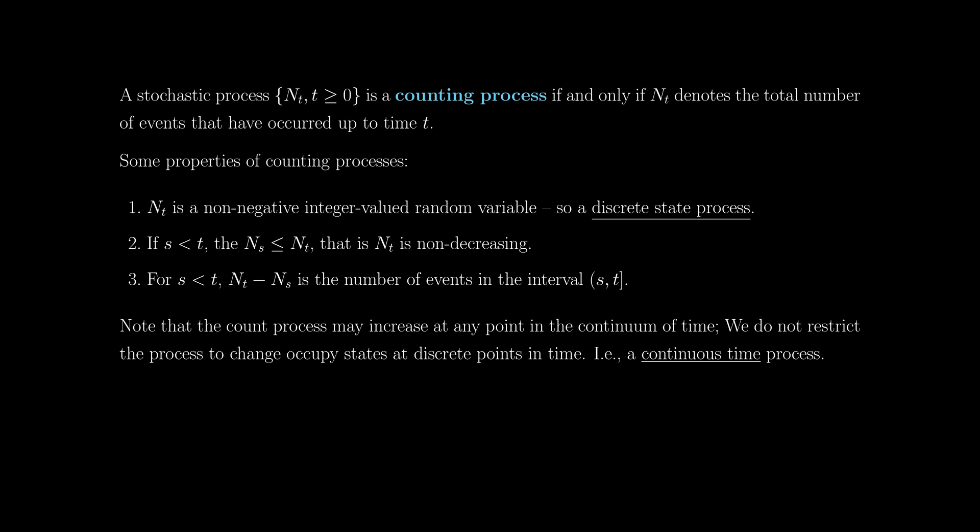N(t) is a non-negative integer-valued random variable. So this is a discrete process. Also, the count at time s is less than or equal to the count at time t — that is, the counting process N(t) is non-decreasing, so it can only go up, it can't go down.